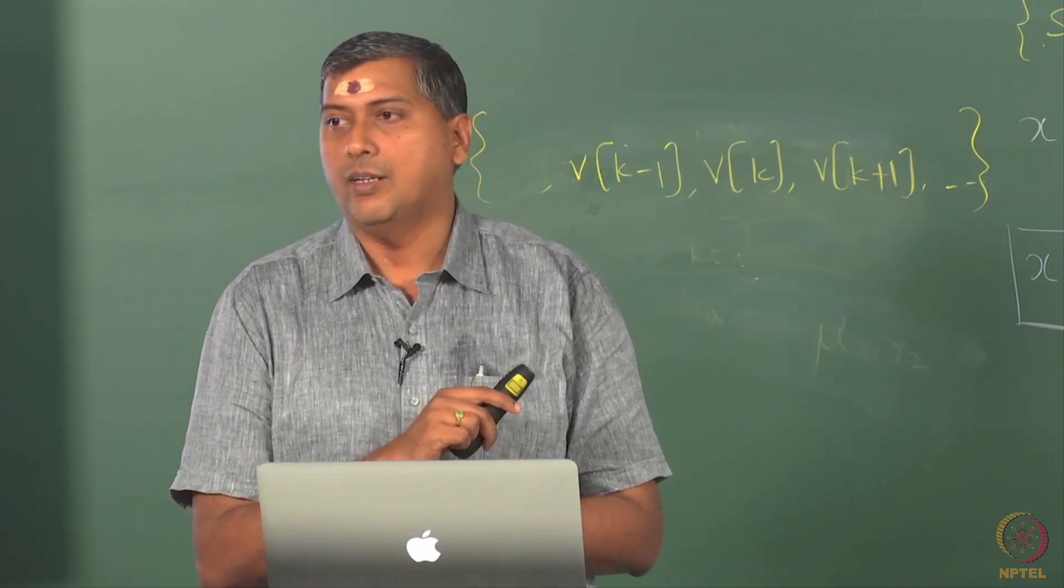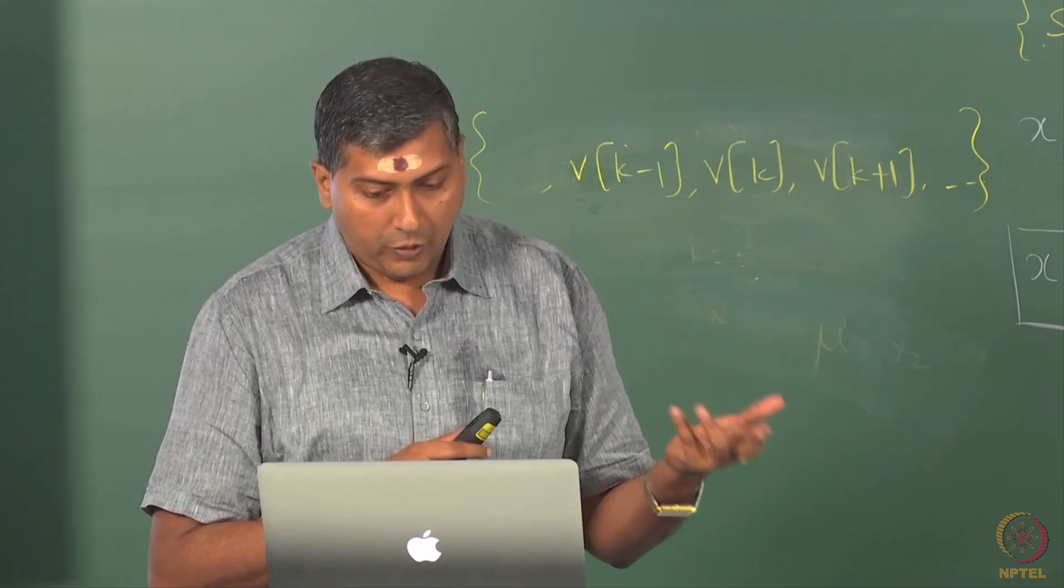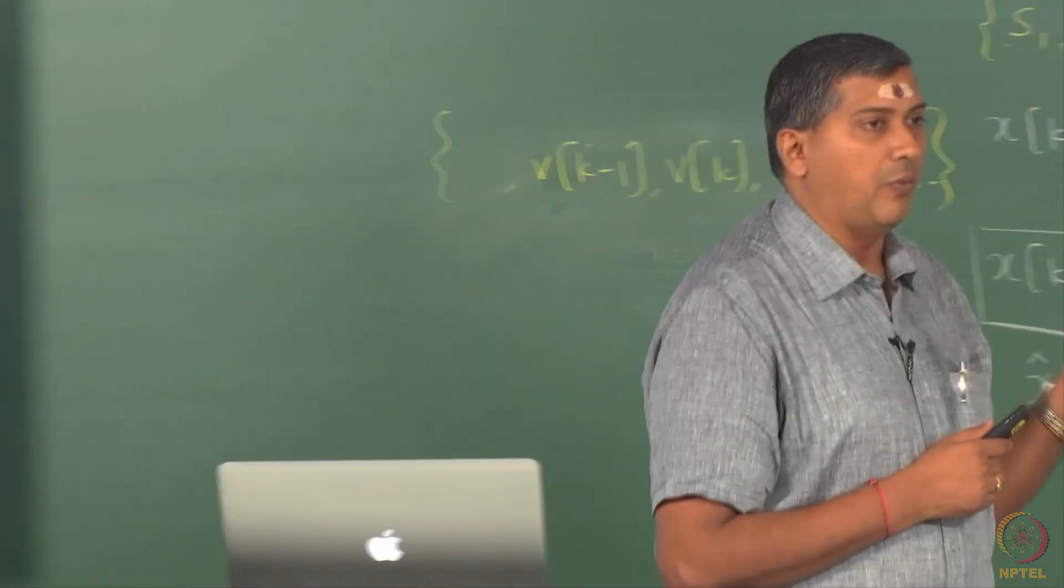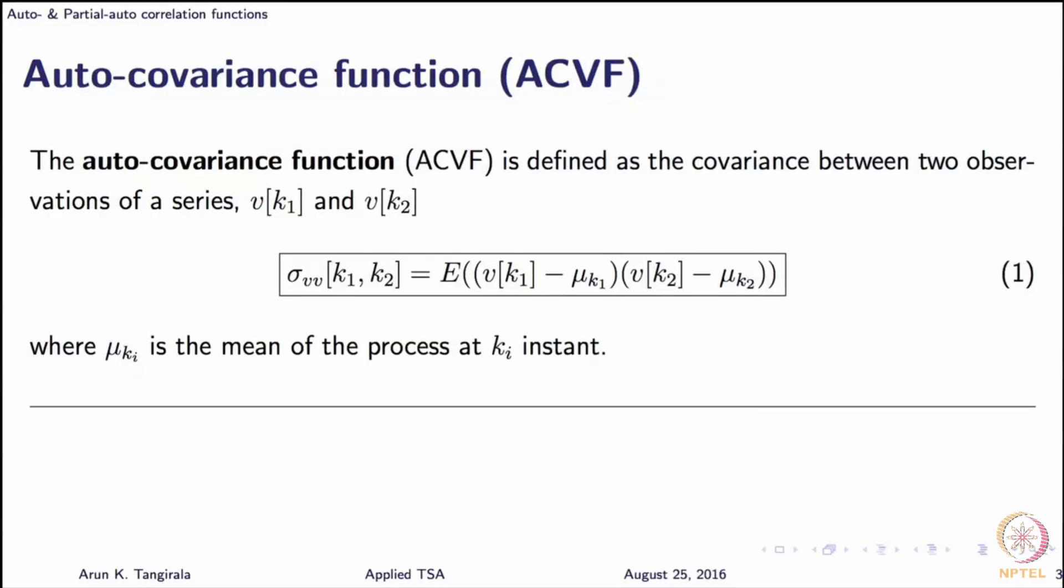So this auto-covariance, as you can see, even yesterday we had introduced this, is covariance between any two observations of a random process v[k], k1 and k2. We have used a slightly diluted notation here. It is an expectation of v[k1] minus mu[k1] times v[k2] minus mu[k2]. In other words, it is simply covariance between v[k1] and v[k2]. This is a very generic definition assuming the process to be non-stationary.